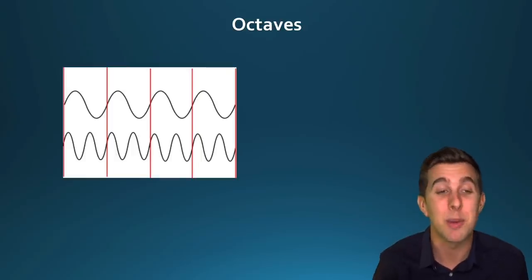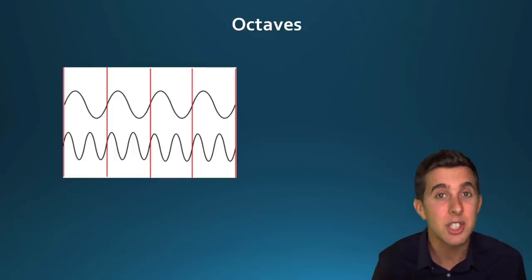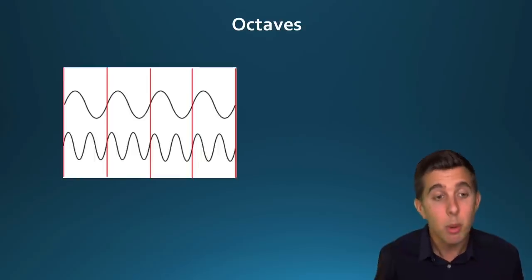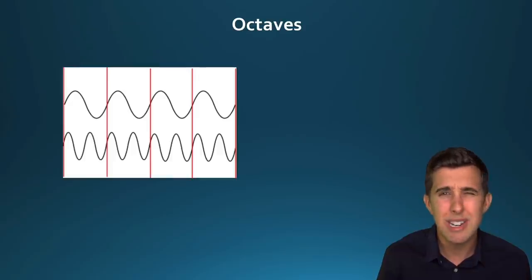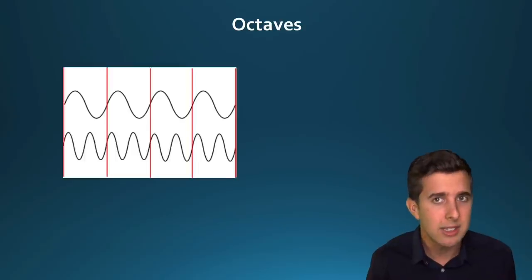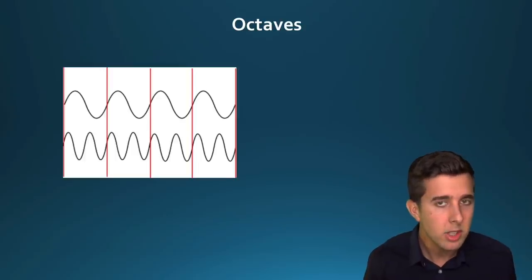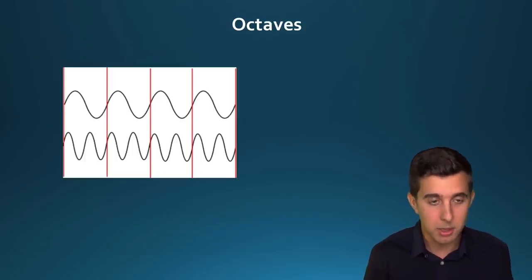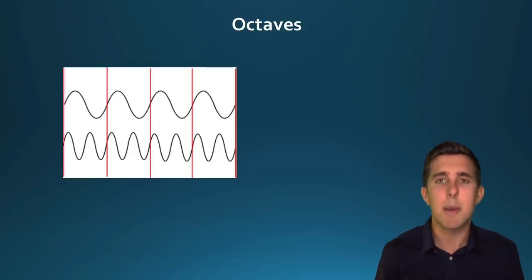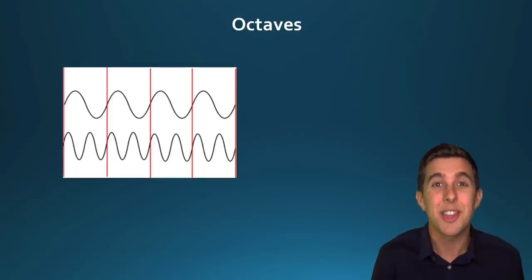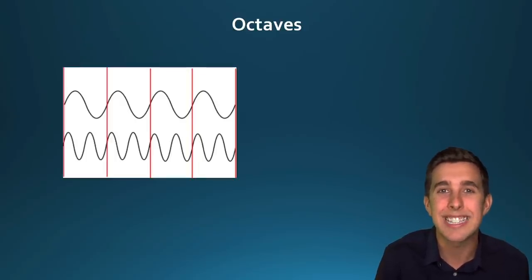'Somewhere Over the Rainbow' is a great way to remember the octave interval. It's really simple and straightforward, and a great way to actually create harmonies. If someone says play an octave bass line, you should know that the bass part will be playing octaves. It's great just to hammer home some of these fundamental parts of music theory. Thank you for watching and I'll see you in the next lecture.